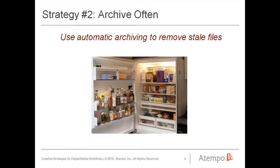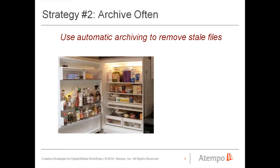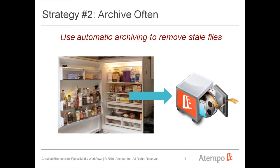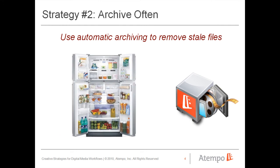Strategy two: archive often — use automatic archiving to reduce clutter. Like an office refrigerator that everyone uses but no one owns, shared storage areas can grow out of control. Your archive should be able to search for stale content and migrate it offline, cleaning up your production storage.